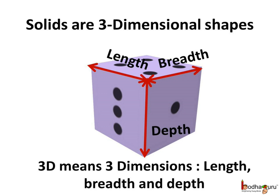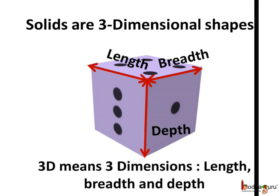Like this dice — it has length, breadth and depth. So all the solid objects are 3D shapes. 3D means 3 dimensions: length, breadth and depth.